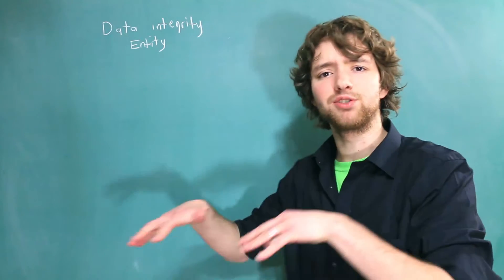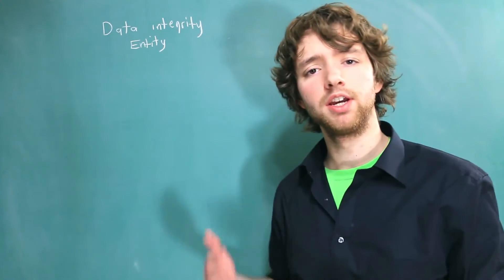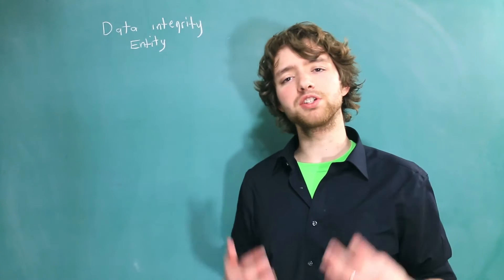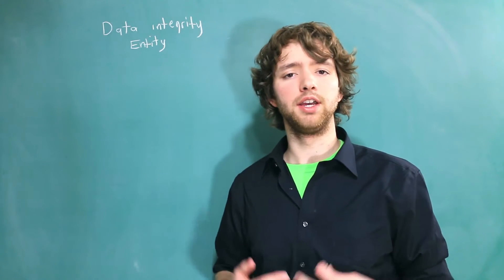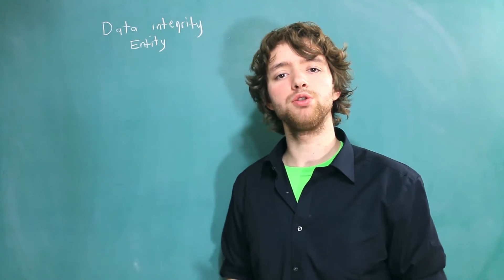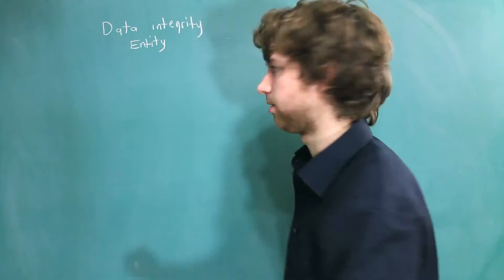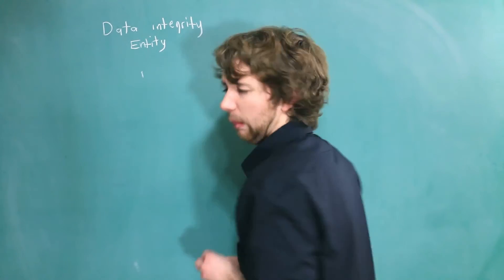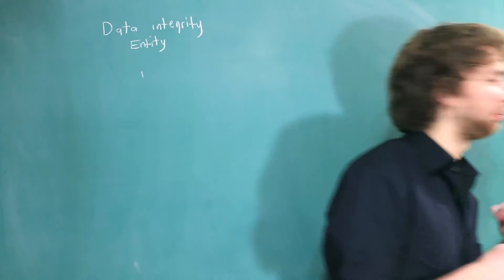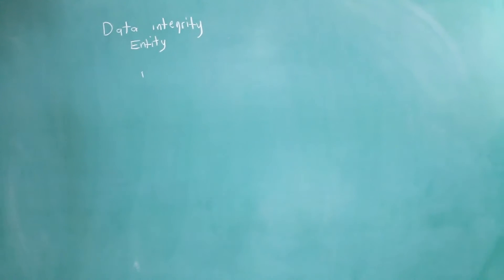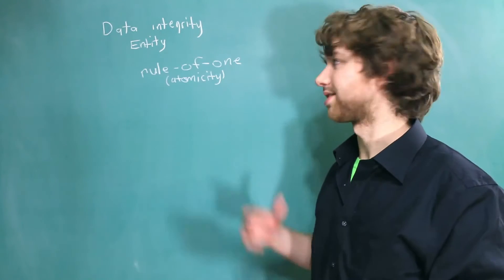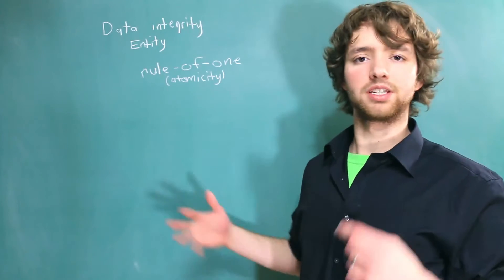Now before we dive into all the depths of entity integrity, let's first focus on what is our goal when we store data, and that goal is to follow the rule of one. You may also hear this as atomicity, or things being atomic, and essentially everything is supposed to describe one thing.